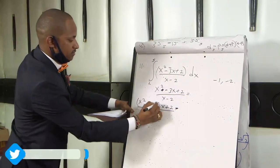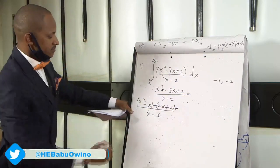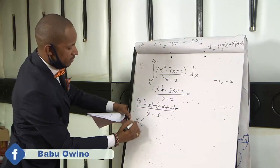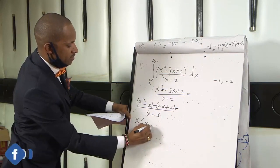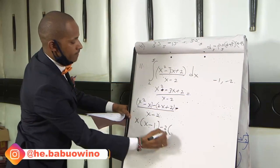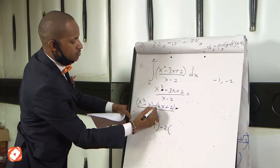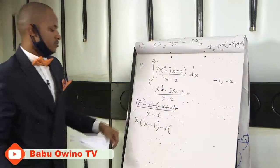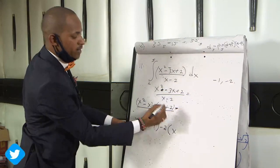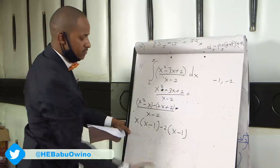When you collect from both sides you find that what is common here is x. x into x squared goes x times, minus x goes into x once. What is common here? 2 into minus 2x goes x times. Then minus 2 goes into plus 2 minus 1.